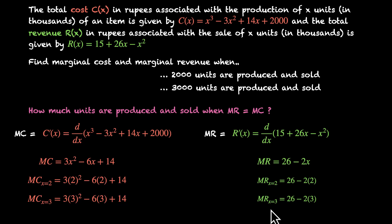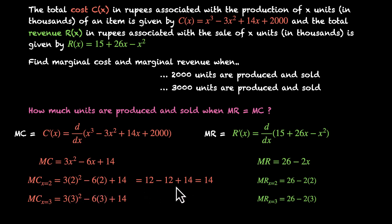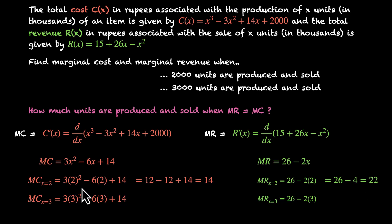Let's compute these values. For x = 2: marginal cost = 3(2²) - 6(2) + 14 = 12 - 12 + 14 = 14. Marginal revenue = 26 - 4 = 22. So for 2000 units, marginal cost is 14 and marginal revenue is 22.